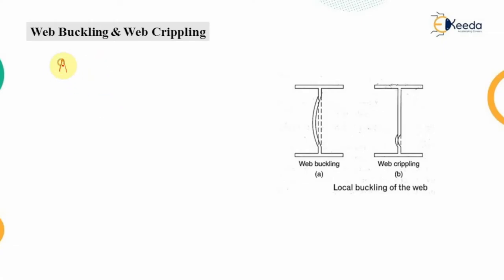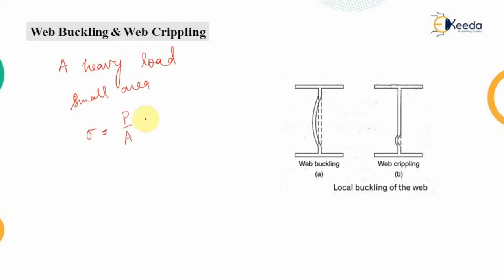Whenever a heavy load or reaction in the form of a concentrated load occurs in a small area, the stress value — that is load divided by cross-sectional area — will be in larger magnitudes. Because of this, the vertical stresses in the beam members exceed the capacity of the section, causing compressive stresses in the vertical elements of the beam, which may fail under two criteria: web buckling and web crippling.